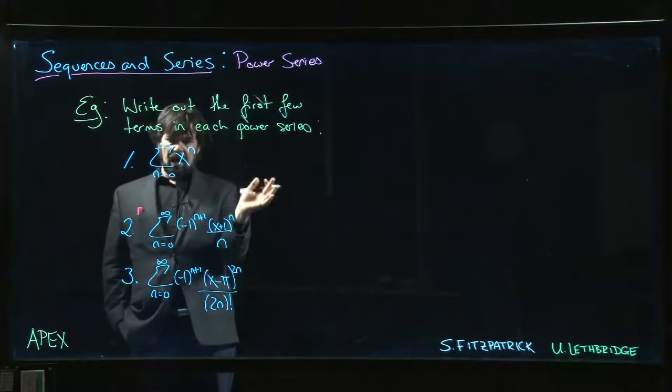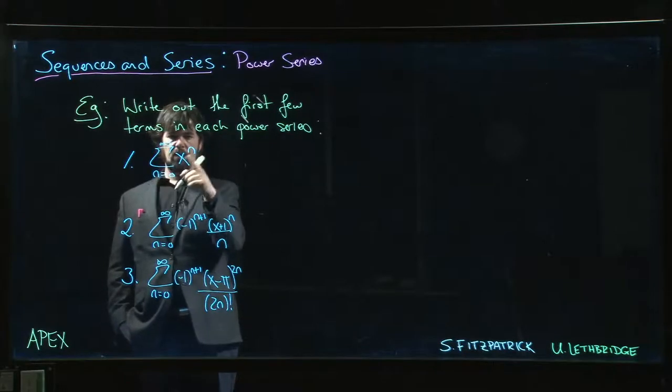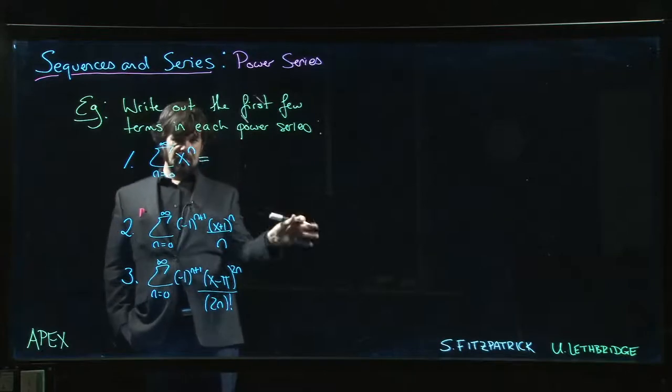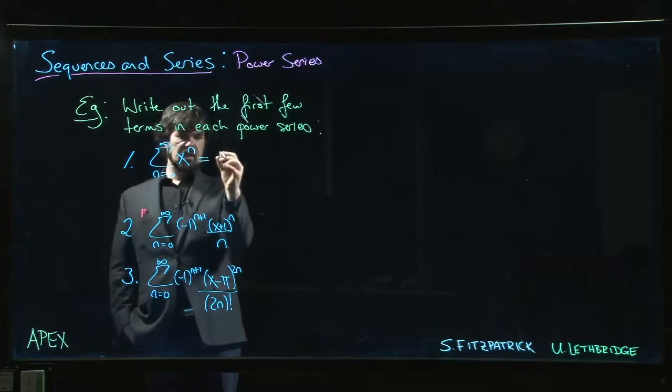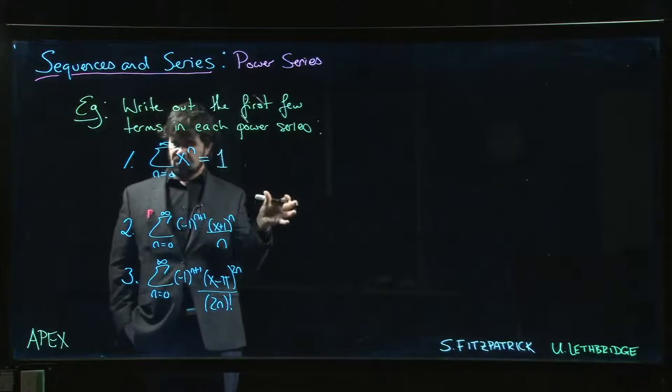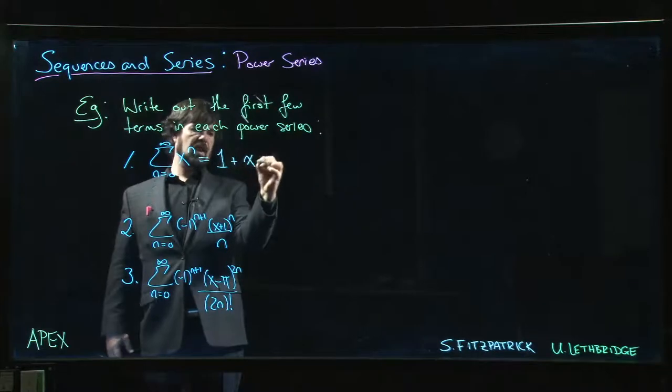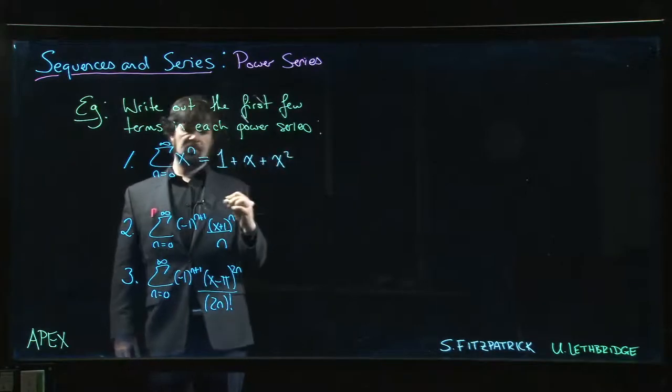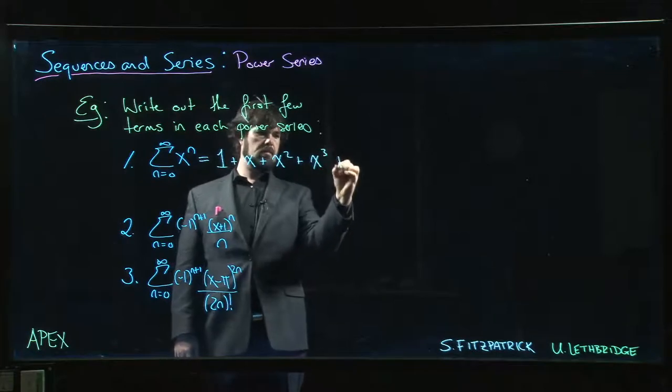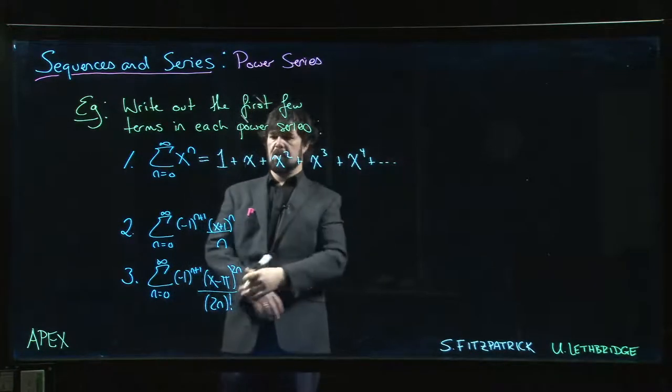So as usual for a series, we just put in each value of n, starting at zero, n equals zero, one, two, three, four, five, you add them up. And as I mentioned in the last video, we take the convention that x to the zero is identically one, even though zero to the zero is not defined. We have one plus x plus x squared plus x cubed plus x to the four. And of course, that's going to keep going from there.